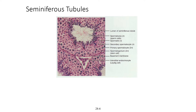Let's have a closer look at the seminiferous tubules at the cellular level. The seminiferous tubules contain two different types of cells: sperm-forming cells and Sertoli cells, which serve as supporting cells. There are also interstitial cells located between the tubules, which secrete the hormone testosterone. Testosterone helps to enhance the sperm formation process.